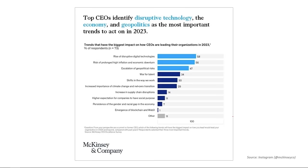Let's take a look at this example from McKinsey. The title says top CEOs identified disruptive technology, the economy, and geopolitics as the most important trends to act on in 2023. This shows survey results about trends leading into 2023, and with a bar chart it's really easy to see which one is longest, second longest, and so on. They've highlighted the top three bars to show they're the most important. It's clear, it's interesting, and it communicates the message really effectively.